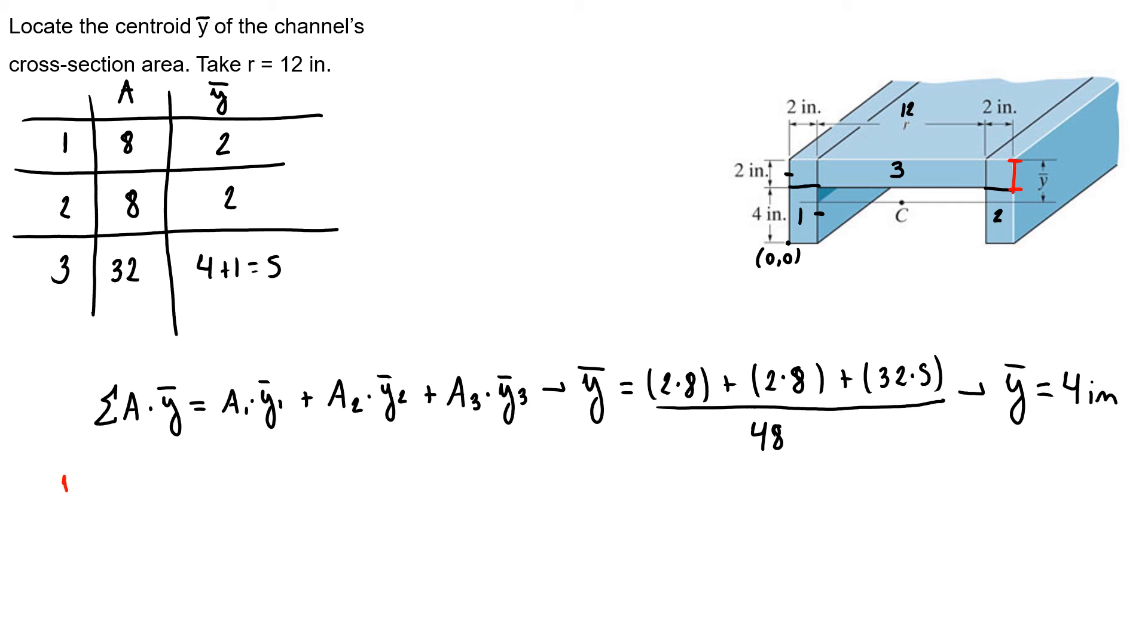So, my y-bar from the top is equal to the whole height, that's 6, minus the y-bar that I just found. So, my y-bar from the top is equal to 6 minus 4 is equal to 2 inches.